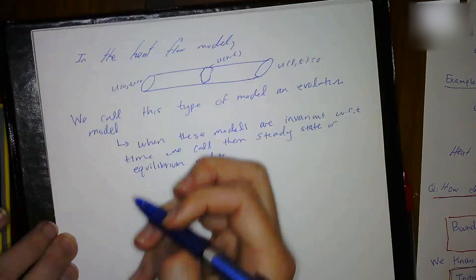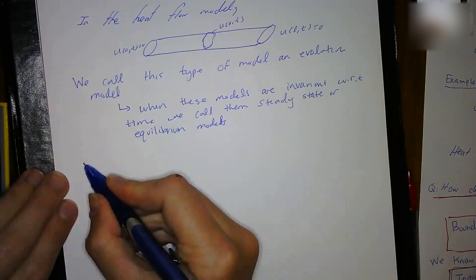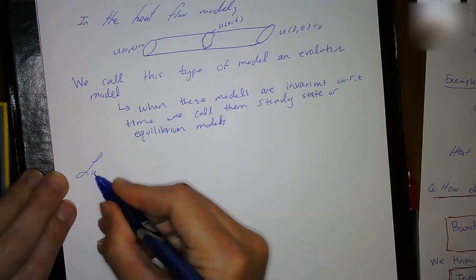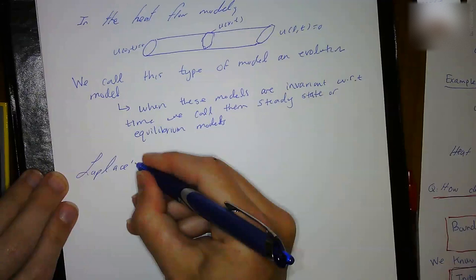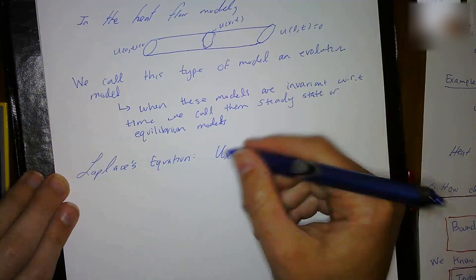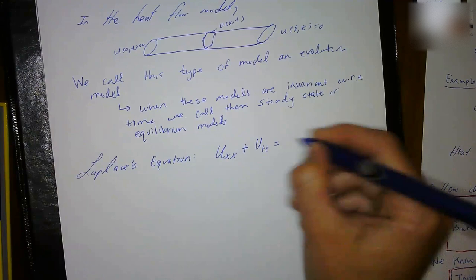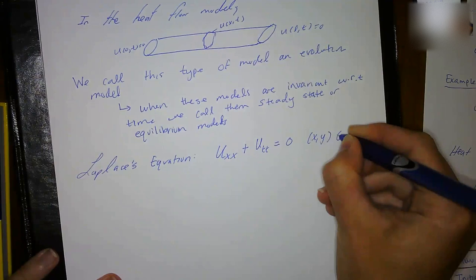One of the more famous equations is Laplace's equation. We're going to expand and look further into Laplace's equation, which will help us understand the steady state concept. Laplace's equation is the double partial derivative of u with respect to x plus the double partial derivative of u with respect to y, and the sum equals 0, for all (x,y) that are elements of Ω.